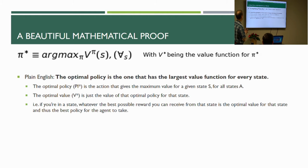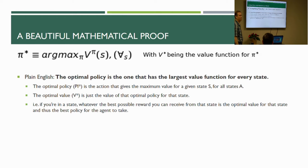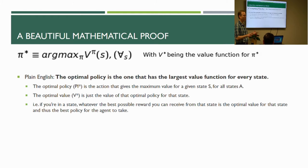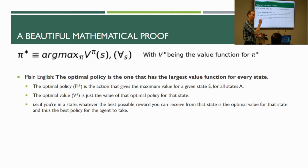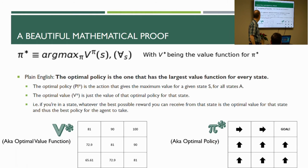Now we define what the optimal policy is. The optimal policy pi-star is basically the argmax of the value — the utility — of a given policy at state S for any given state S. Argmax simply means: whatever action moves you to the maximum utility, take that one. Take the argument — the action — that maximizes your value. This is actually fairly straightforward once you understand it.